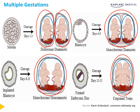All of this is important because management and screening differ for higher-risk pregnancies. With monochorionic twins, there is a risk for twin-twin transfusion syndrome — the development of vascular anastomoses which cause differential perfusion of one twin over the other, resulting in one twin becoming anemic and potentially developing hydrops fetalis, while the other can experience volume overload.